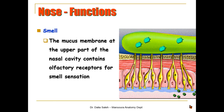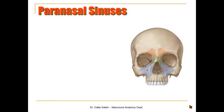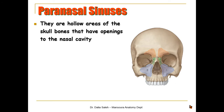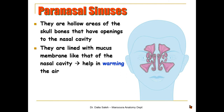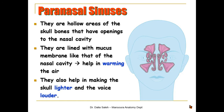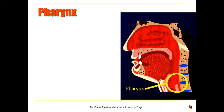Around the nose there are paranasal sinuses — hollow areas of the skull bones with openings into the nasal cavity. They are lined with a mucous membrane similar to that of the nose, so they help in warming and humidifying the air. Being hollow spaces in the skull, they also help make the skull lighter and make the voice more resonant.